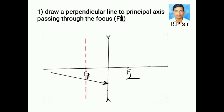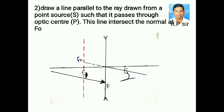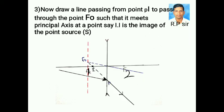Next, draw a normal at F1. Next, draw a parallel line to the incident ray. This parallel line meets the normal at F0. Next,